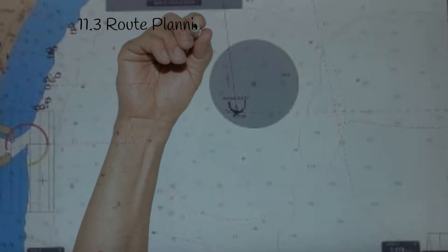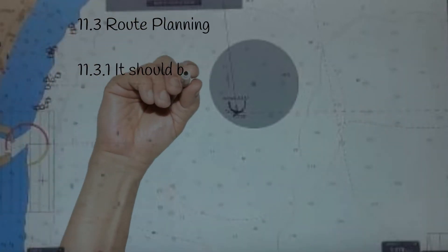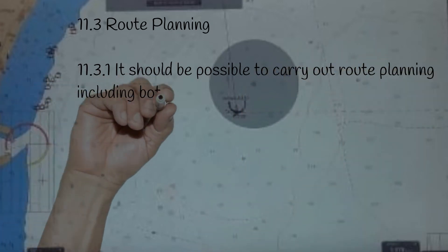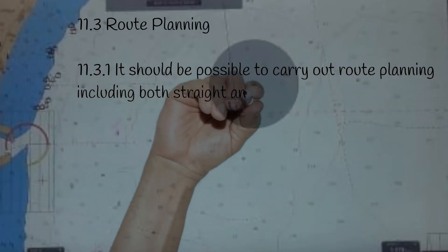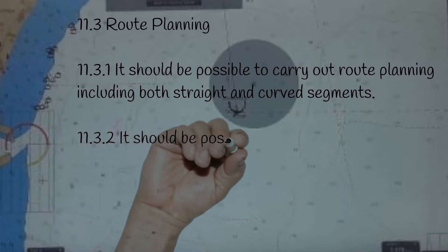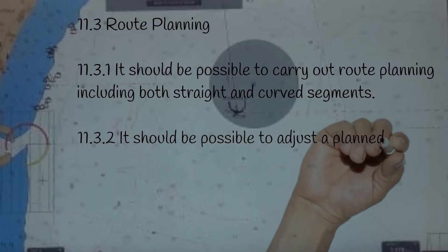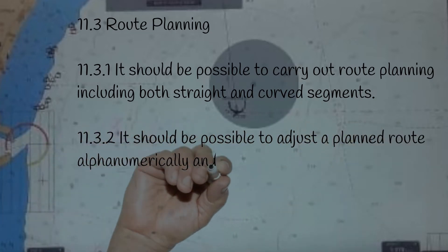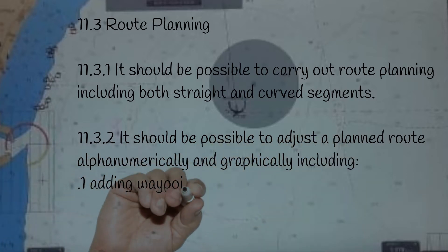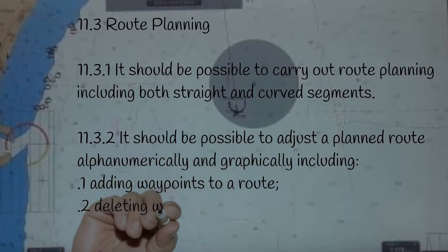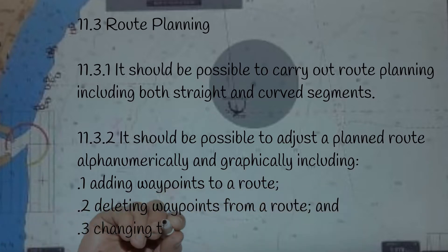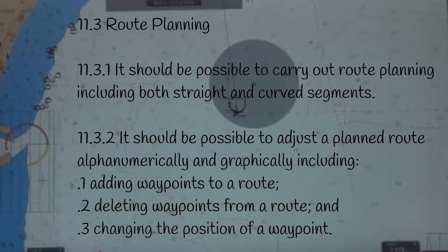11.3. Route Planning. 11.3.1. It should be possible to carry out route planning including both straight and curved segments. 11.3.2. It should be possible to adjust a planned route alphanumerically and graphically, including: 1. Adding waypoints to a route; 2. Deleting waypoints from a route; and 3. Changing the position of a waypoint.